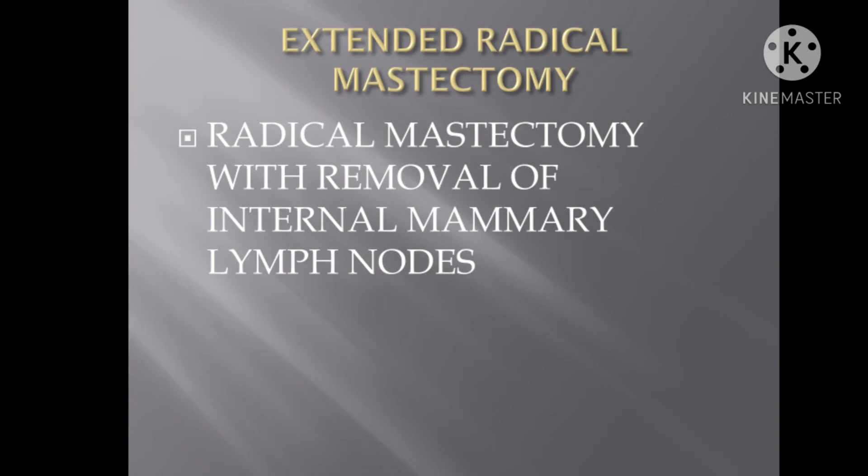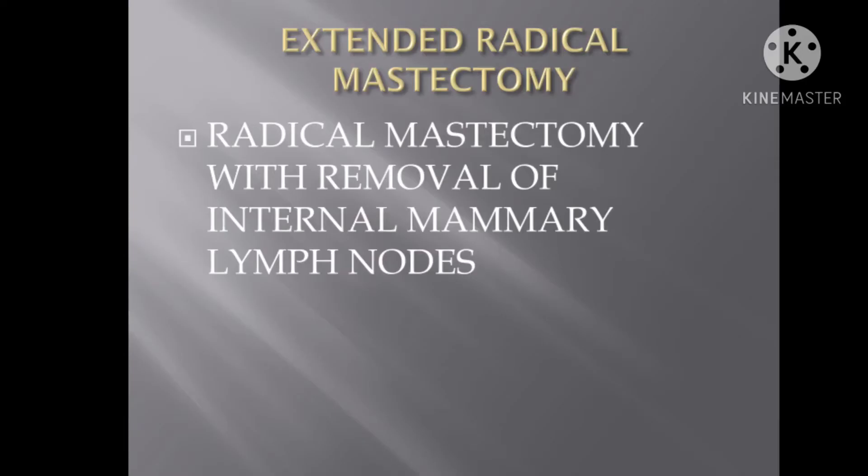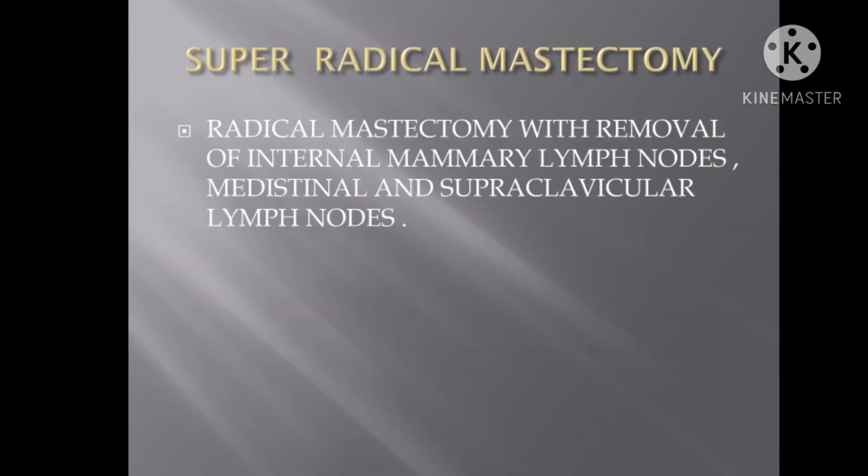There are other modifications of radical mastectomy, like Super Radical Mastectomy and Extended Radical Mastectomy, but these are of historical importance only and are not performed nowadays. The Extended Radical Mastectomy involves removal of internal mammary lymph nodes in addition to the radical mastectomy. In the Super Radical Mastectomy, internal mammary, supraclavicular, and mediastinal lymph nodes are also removed. These procedures are too morbid and are no longer performed.